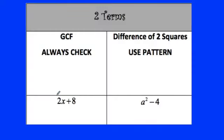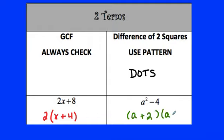All right. So here's an example. Two terms. I always check for GCF no matter what. So I see that 2x and 8 have a common factor of 2. I factor that out and I'd be left with x plus 4. So it's like backwards distributing. Then if I look at this next one, there's no GCF, but then I see it's two terms and it happens to be DOTS. So I use that factor pattern that we've been talking about. So a plus 2 and a minus 2.